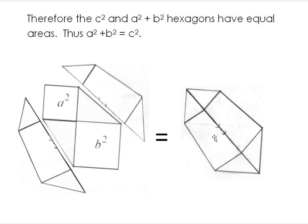And so the a² + b² hexagon that has the two triangles in it is equal to the c² hexagon that has the same two triangles in it. And since the two triangles in each figure are of equal area, a² + b² must equal c². So it's one of the many, many proofs of the Pythagorean theorem.